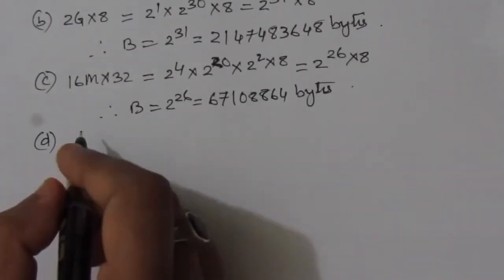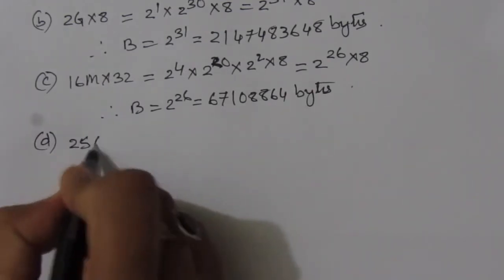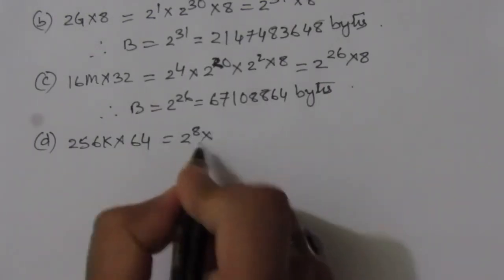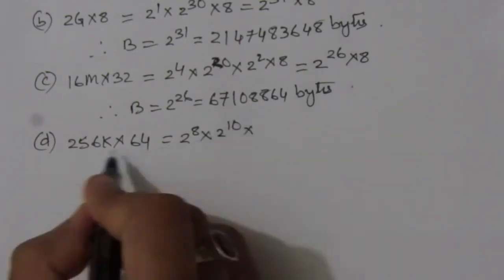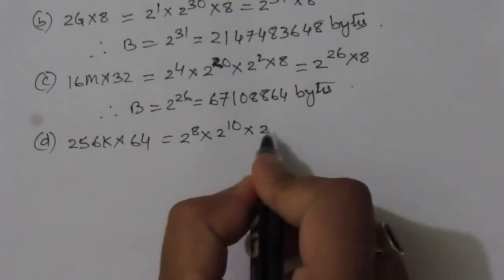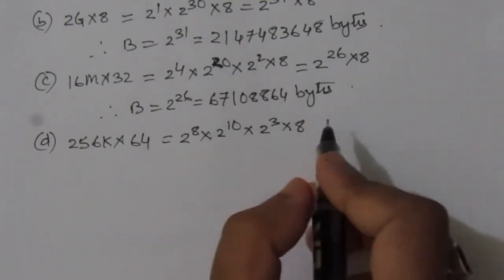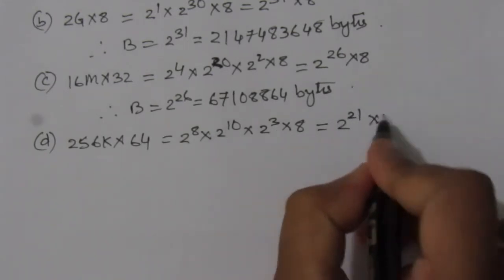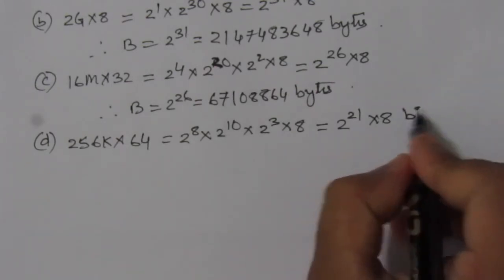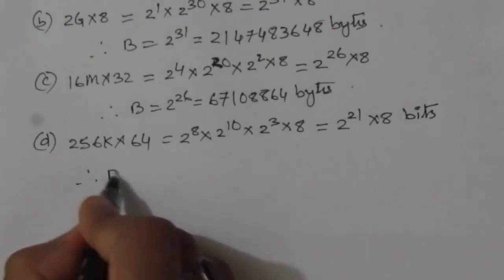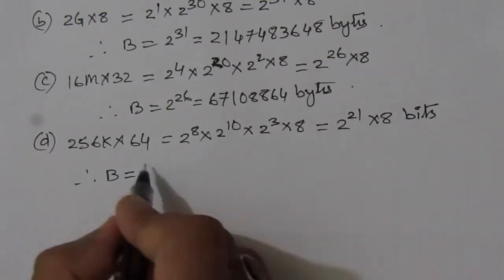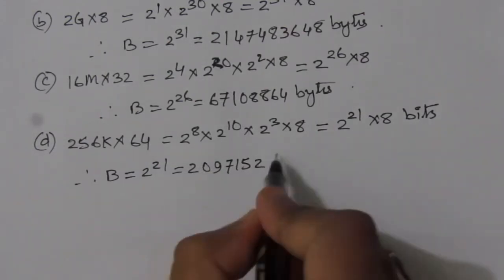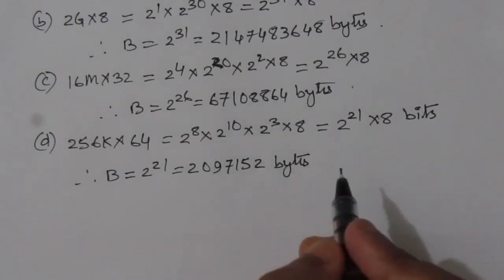In part d, we have 256K × 64. Here 256 = 2^8, K = 2^10, and 64 = 8 × 8 = 2^3 × 8, giving us 2^(8+10+3) × 8 = 2^21 × 8 bits. Therefore, the number of bytes B = 2^21 = 2,097,152 bytes.